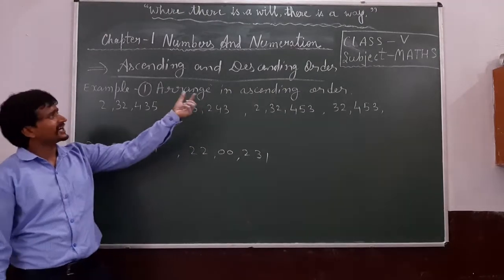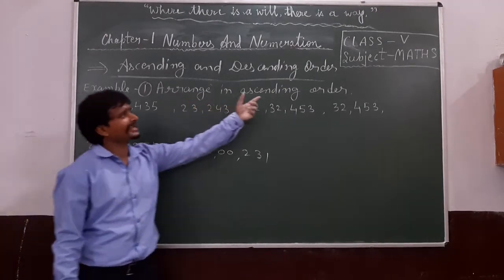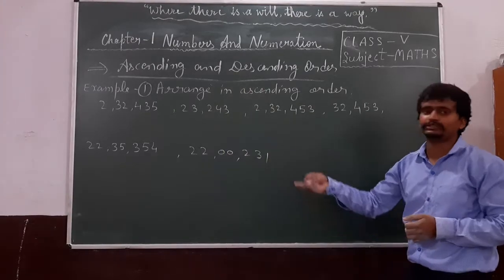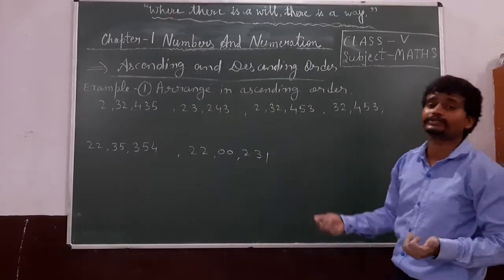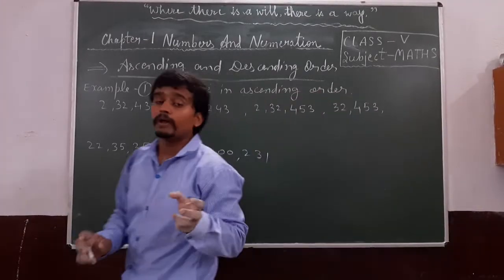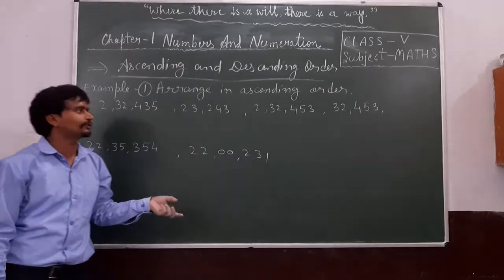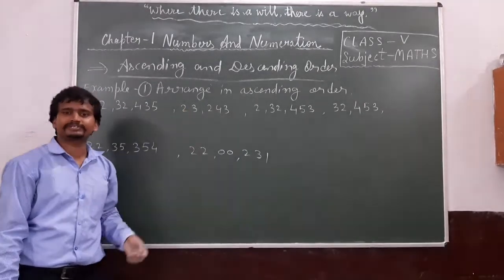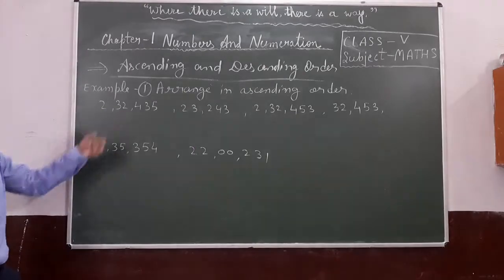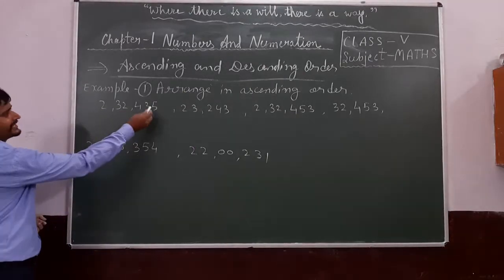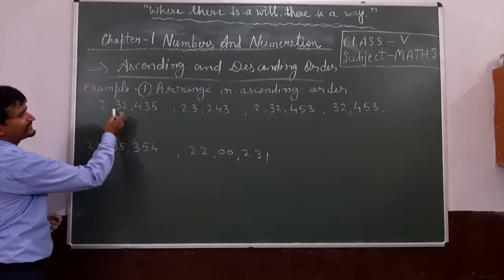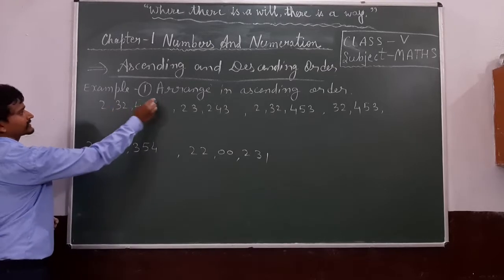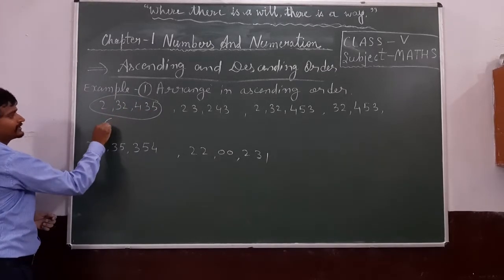The example is: arrange in ascending order. Some numbers are given and we have to arrange them in ascending order. Watch our steps very carefully. First of all, we count the number of digits in each number. In the first number there are 1, 2, 3, 4, 5, 6 — 6 digits.